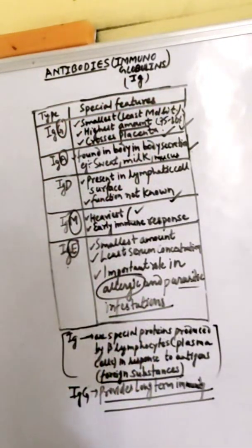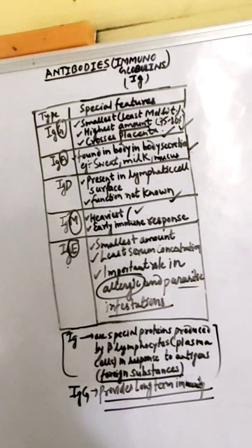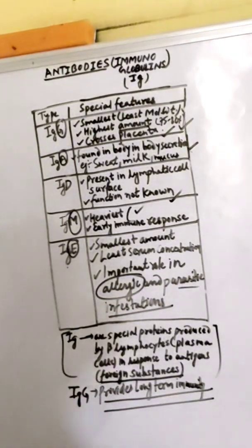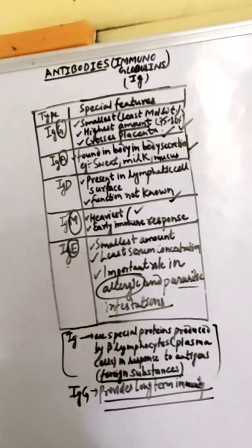Antibody is also called immunoglobulin, and we represent it as IgG. There are five types of antibodies: IgA, IgG, IgE, IgD, and IgM. We will discuss these types.